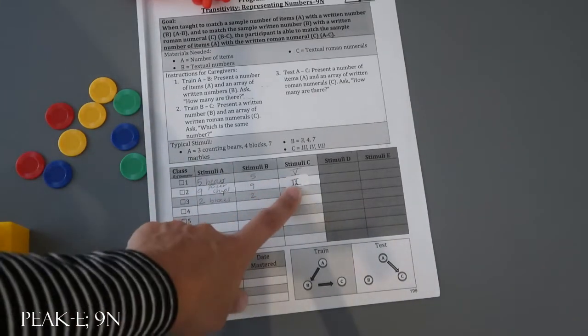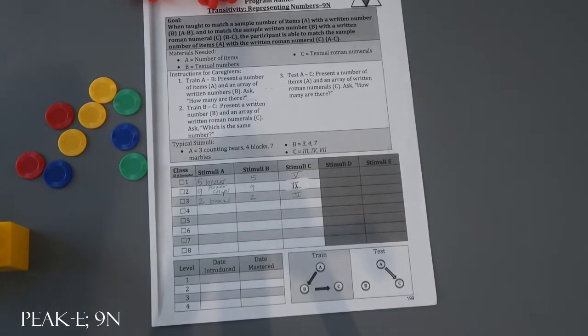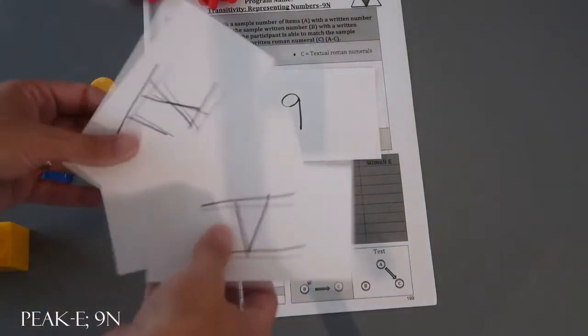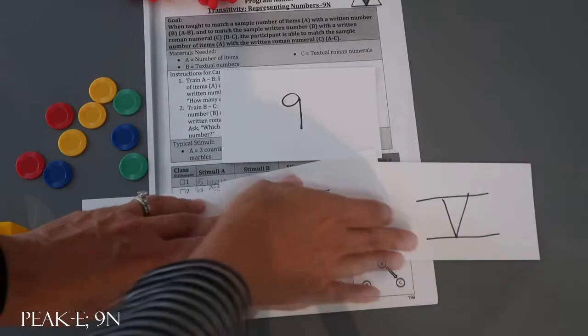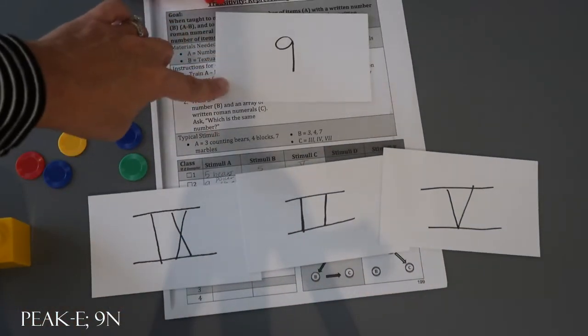B to C is also train, so you're going to be giving feedback, reinforcing, and prompting. You give a written number and put the roman numerals in front of the participant, and you ask which is the same number.